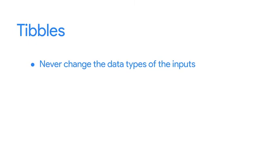Data frames are foundational. Now, let's talk about tibbles. In the tidyverse, tibbles are like streamlined data frames. They make working with data easier, but they're a little different from standard data frames. First, tibbles never change the data types of the inputs — they won't change your strings to factors or anything else. You can make more changes to base data frames, but tibbles are easier to use. This saves time because you won't have to do as much cleaning or changing data types in tibbles.